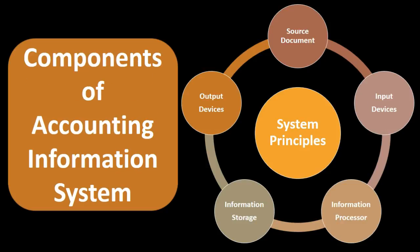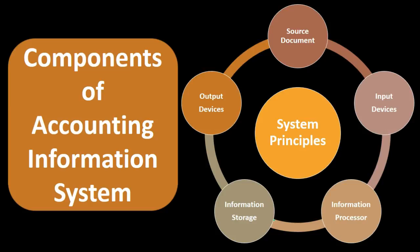We can also think of components of the accounting information system. As we go through the system to put transaction data into the end result of financial statements, we can think about the process in terms of components, including source documents that we first use to input the data, input devices such as computer input devices or credit card machines, information processing, information storage — often in some type of database — and then of course output, which is how the information is displayed and created within our accounting information system.